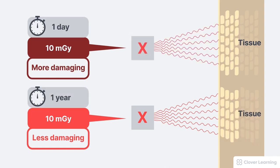Finally, radiation exposure rate is one more factor that influences radiosensitivity. The faster a radiation dose is delivered, the more damaging the radiation will be. For example, a radiation dose of 10 mGy received in one day causes more harm than the same dose accumulated over one year. The damage is greater, and the risk of developing a radiation-induced cancer is also greater, because the cells have less time to heal.